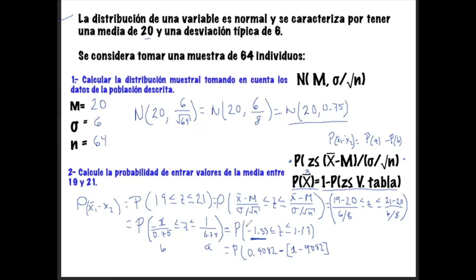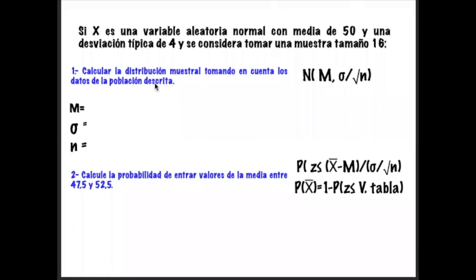Ya tendríamos el valor del dato negativo, y ese dato negativo se lo restaremos al mismo valor pero en positivo. Aquí ya nos arroja directamente el valor de la probabilidad de encontrar una media, con este tamaño de muestreo, dentro del intervalo de 19 y 21. Nos da el valor de 0.8164. Esta es la probabilidad de encontrar una media con ese muestreo dentro de este intervalo.